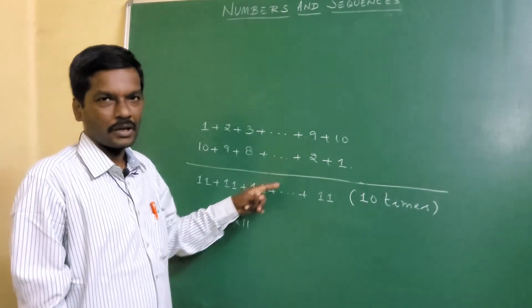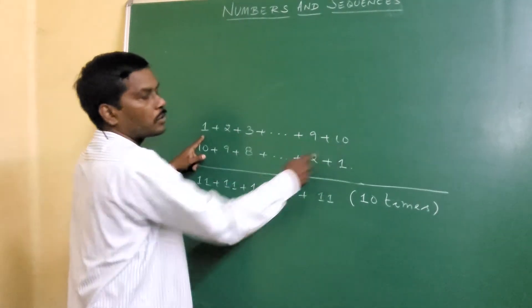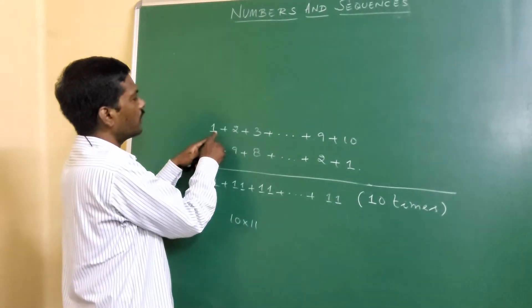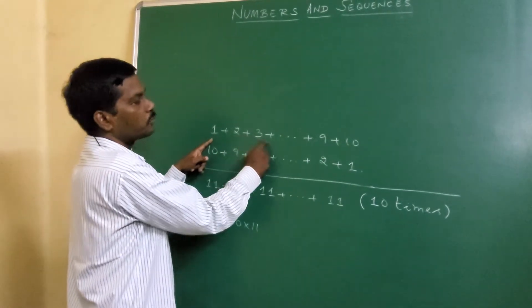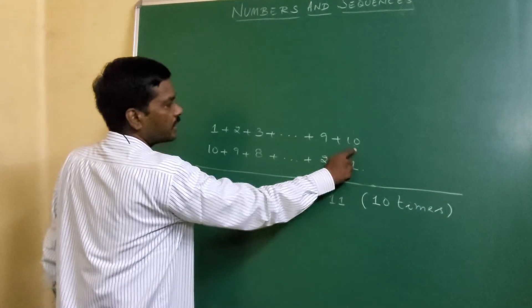How do you add with the short technique? 1, 2, 3, 4, up to 9, 10. Then we write 10, 9, 8, down to 2, 1. We write all the terms together.